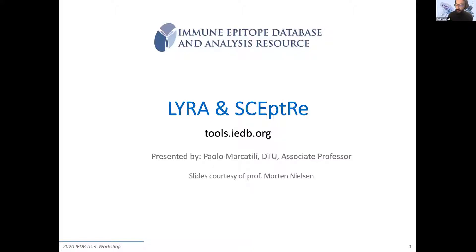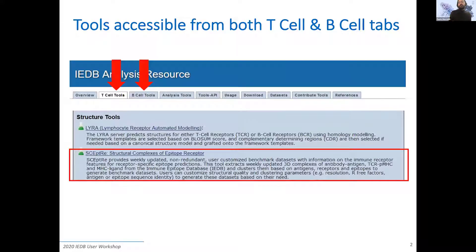And thanks Martin for the slides. We'll go through these two different tools, LYRA and SCEptRe. The main idea of those tools is to give you the ability to identify a solvent structure of lymphocyte receptors — so B-cell and T-cell receptors in complex with their antigen — and also to model those. We'll start with SCEptRe, which stands for Structural Complexes of Epitope Receptor. It's a tool to identify and retrieve solvent structures for antibodies and T-cell receptors in complex with MHCs and MHC in complex with peptide.